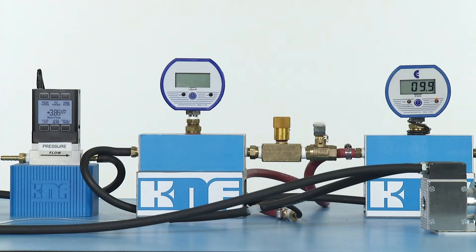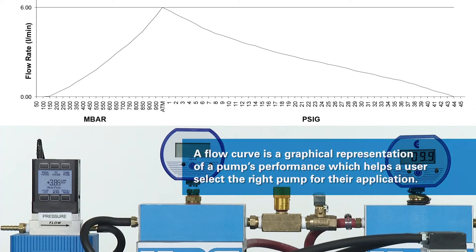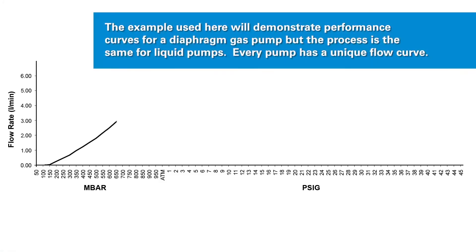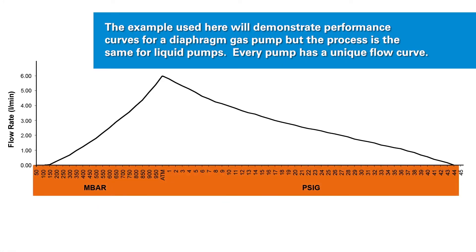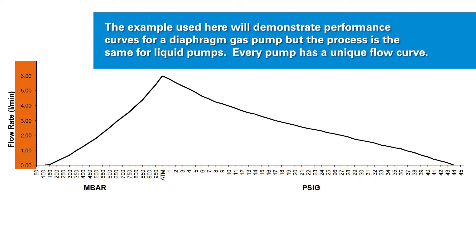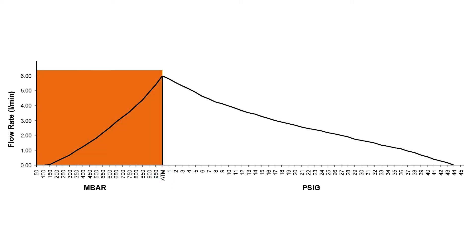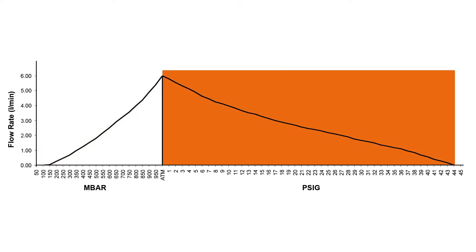For every vacuum pump and compressor that KNF manufactures, a flow curve is generated to illustrate the expected performance capabilities across the rated pressure range. The performance is mapped on a chart where the x-axis is pressure and the y-axis is flow rate. The center line represents atmospheric pressure, so that the left half of the curve displays vacuum, measured in millibar absolute or inches mercury, and the right half represents pressure, measured in PSIG or bar G.